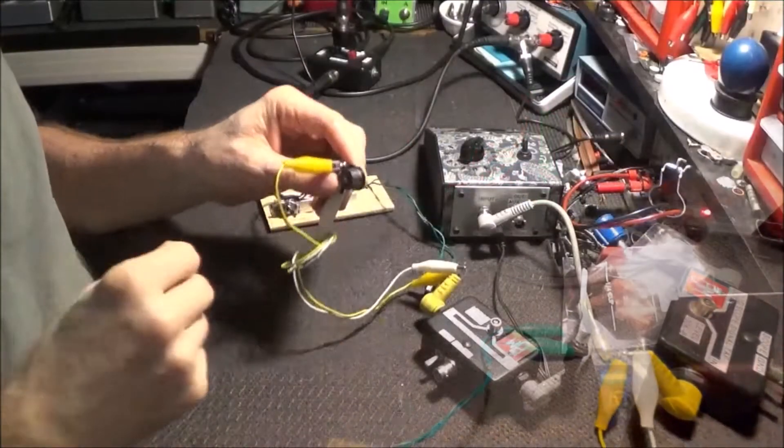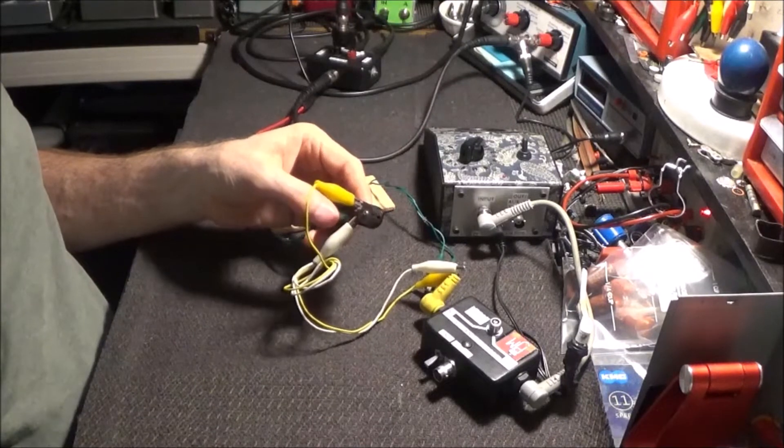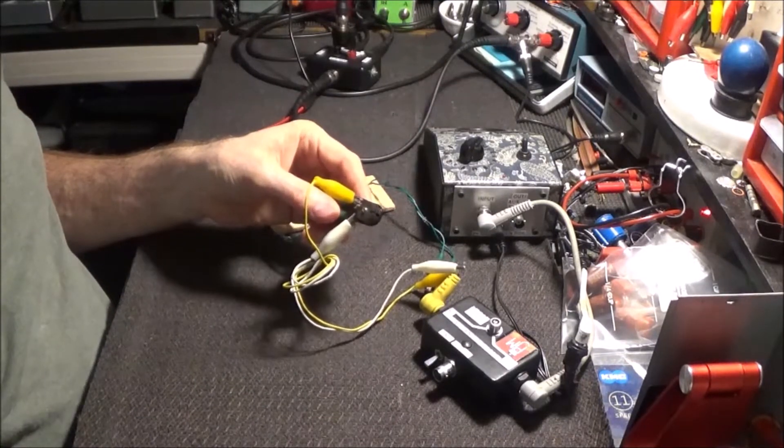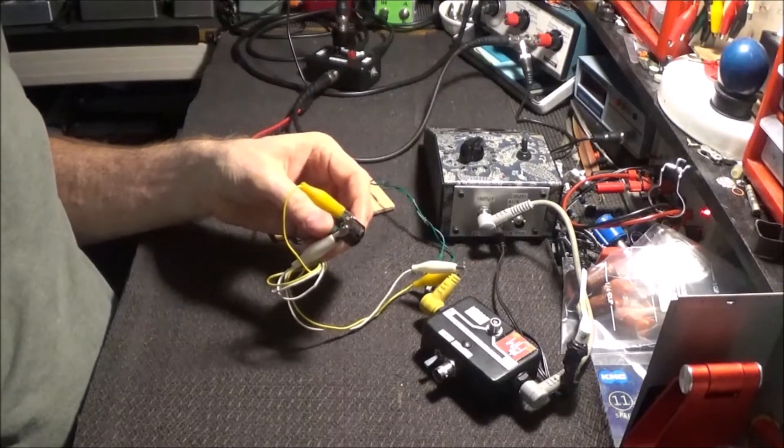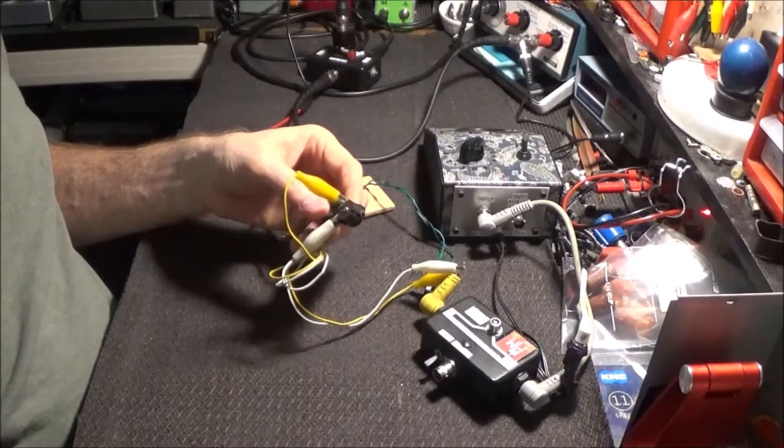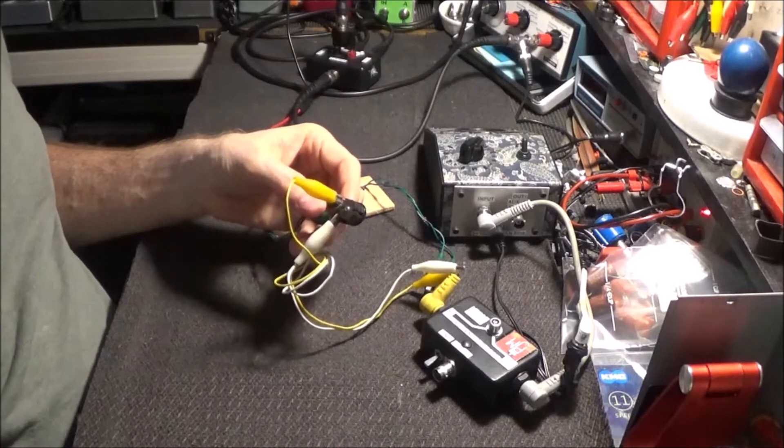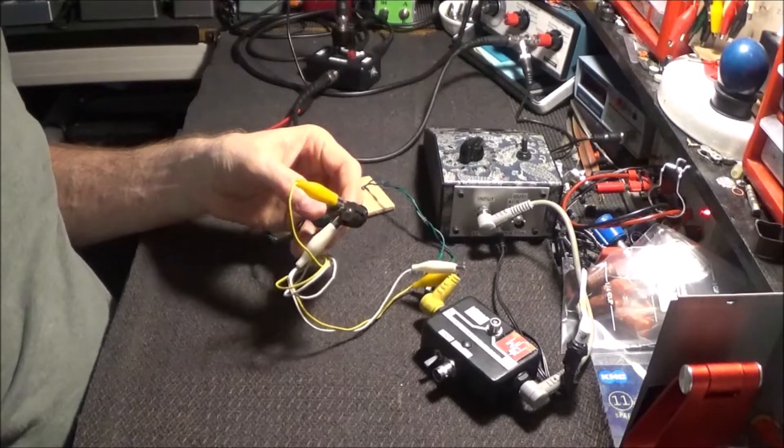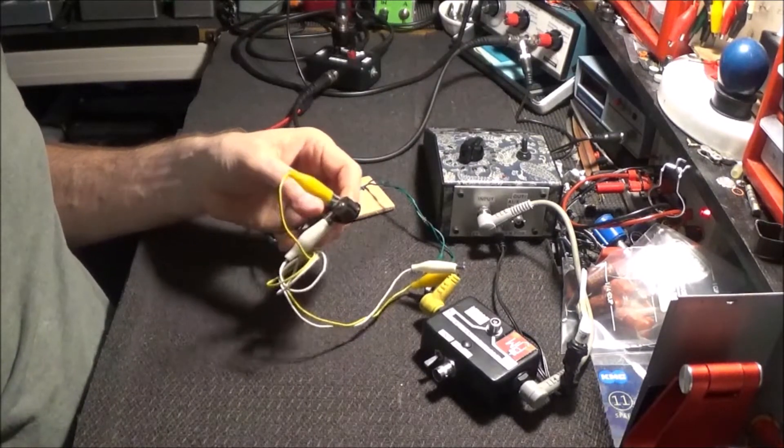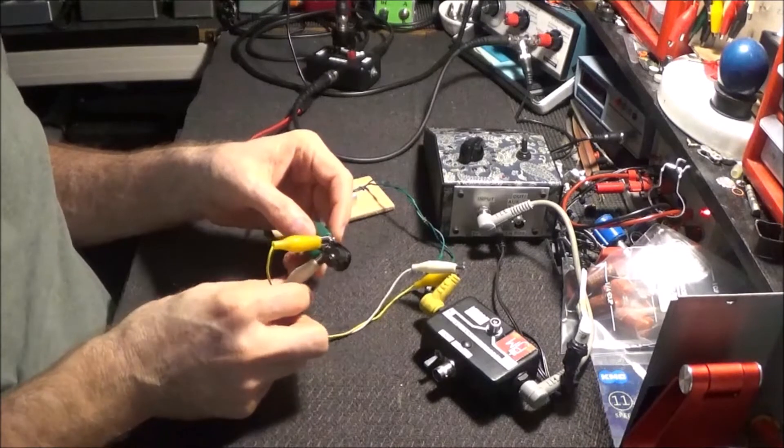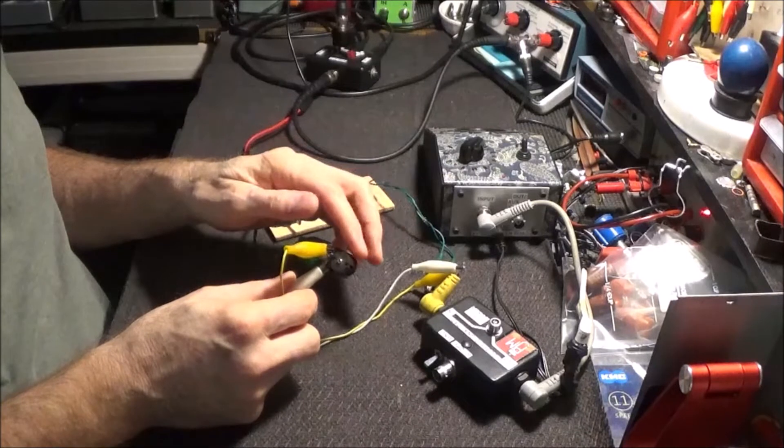So the inductor that I'm going to be testing is just a general purpose one Henry inductor made in Japan by a company named Mitsumi. This was pulled out of an old Radio Shack graphic equalizer that I tore apart simply to get all the different inductors out of it, which I kind of kicked myself for doing now, but it has also allowed me to have various value inductors to mess around with. So I'm just going to feed this a one kilohertz sine wave signal directly through the inductor and into my little mini amp.